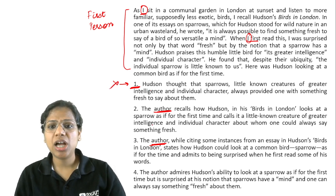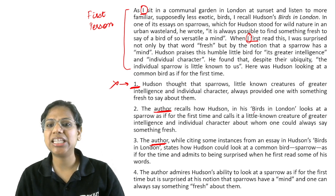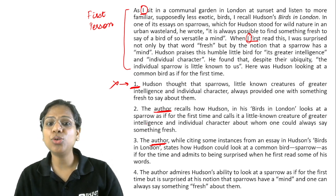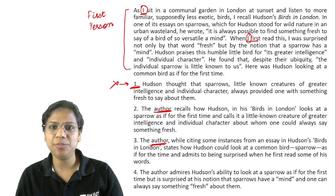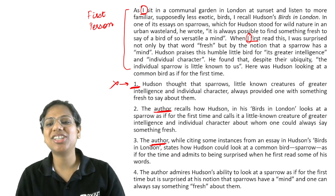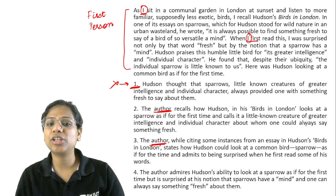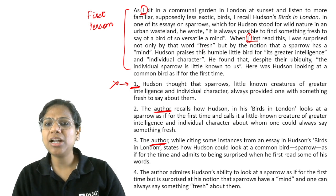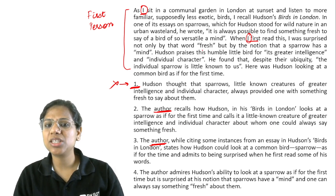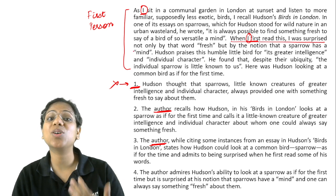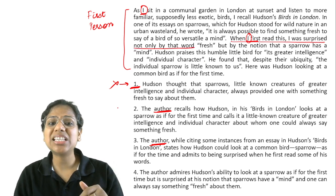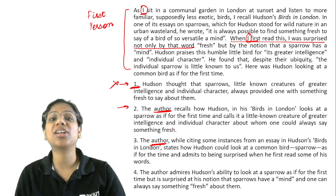Coming to Option 2: the author recalls how Hudson in his Birds in London looks at a sparrow as if for the first time and calls it a little known creature of greater intelligence and individual character about whom one could always say something fresh. But doesn't it miss the point wherein the author says, when I first read this, I was surprised? So it misses out the author's reaction to what Hudson said.